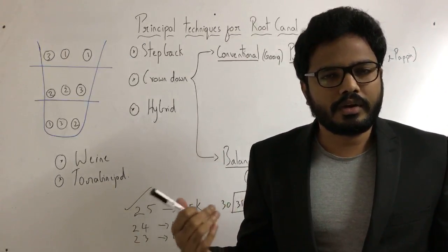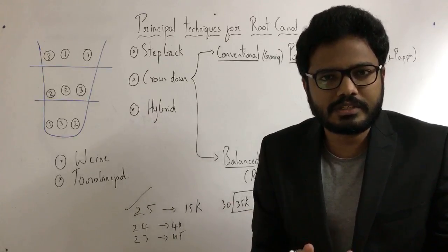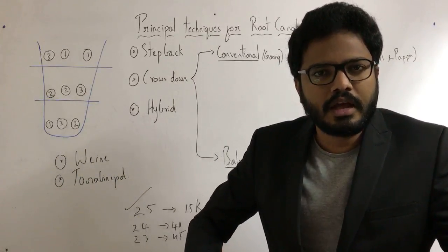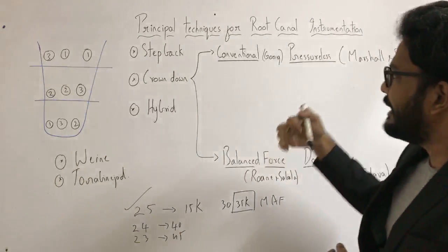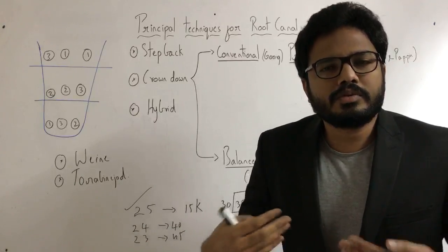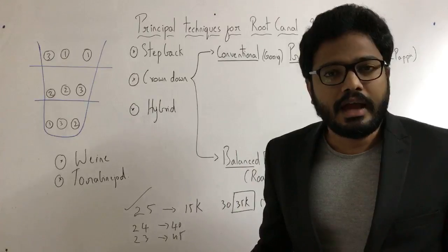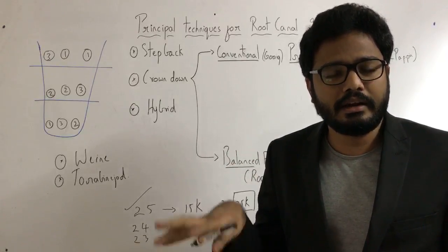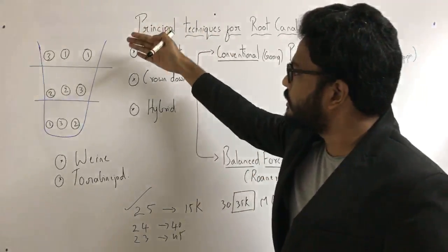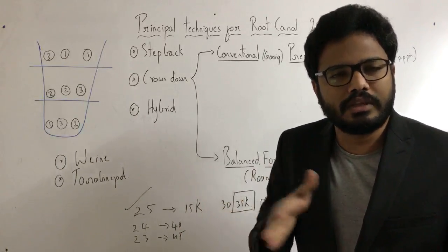Crown-down technique proceeds in reverse. The greatest drawback of step-back is that even though you can clean the apical third first and achieve an apical stop, you then proceed with middle and coronal third cleaning. In crown-down, you remove the bulk of debris present over the coronal and middle third first, then proceed to clean the apical third. As a result, chances of apical extrusion are minimal, chances of transporting your canal are minimal, and access to the apical third is more efficient.